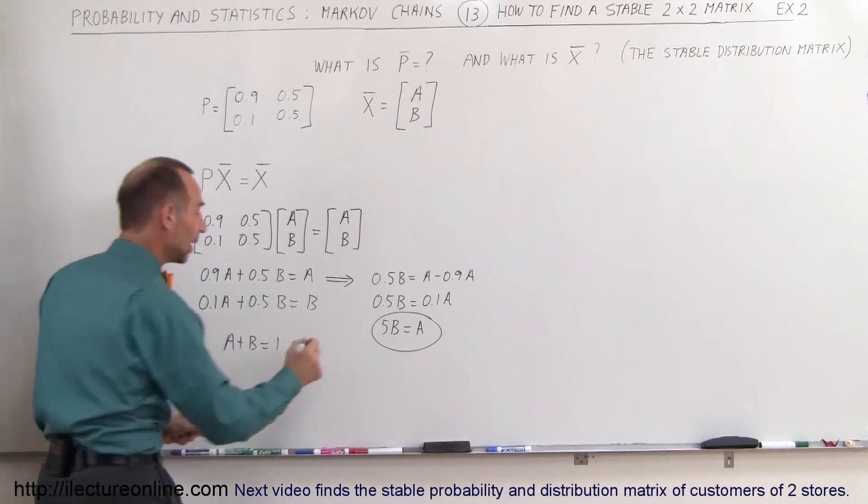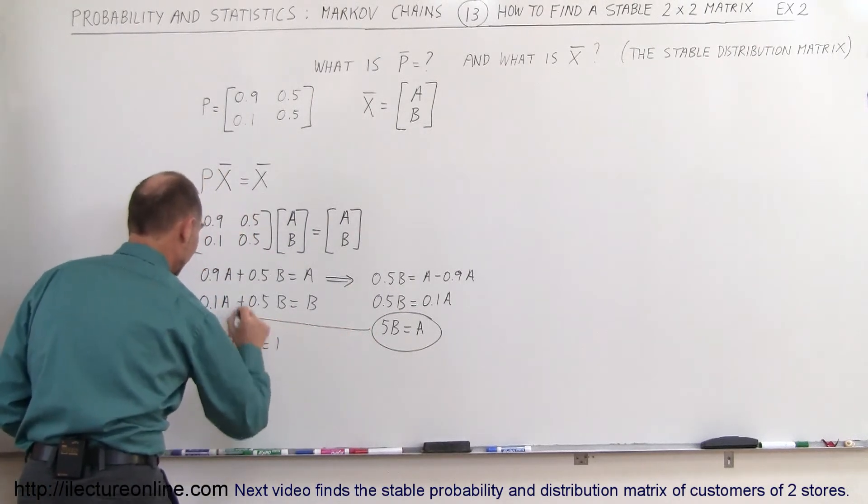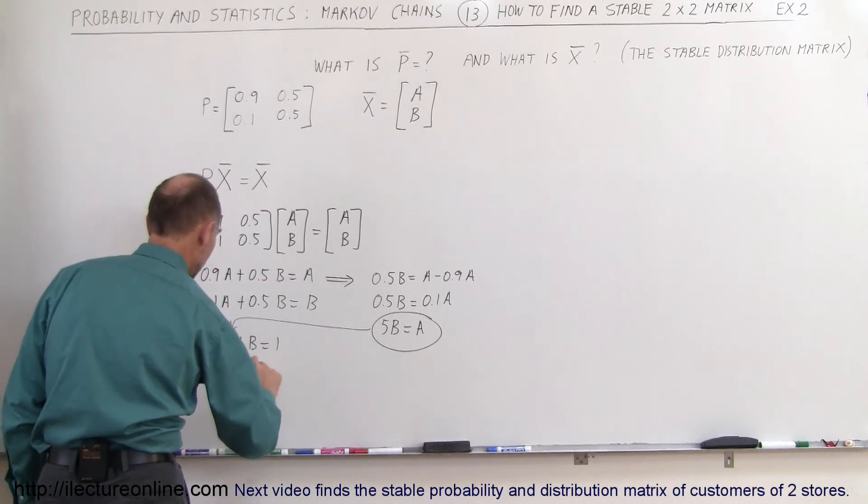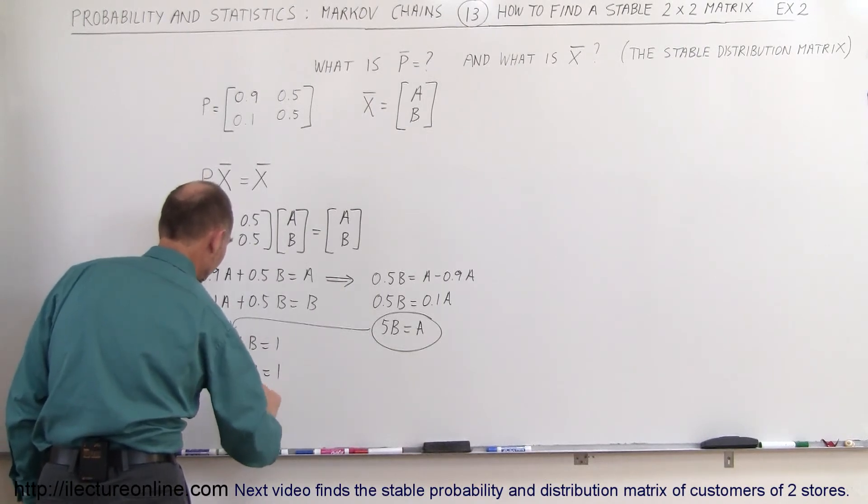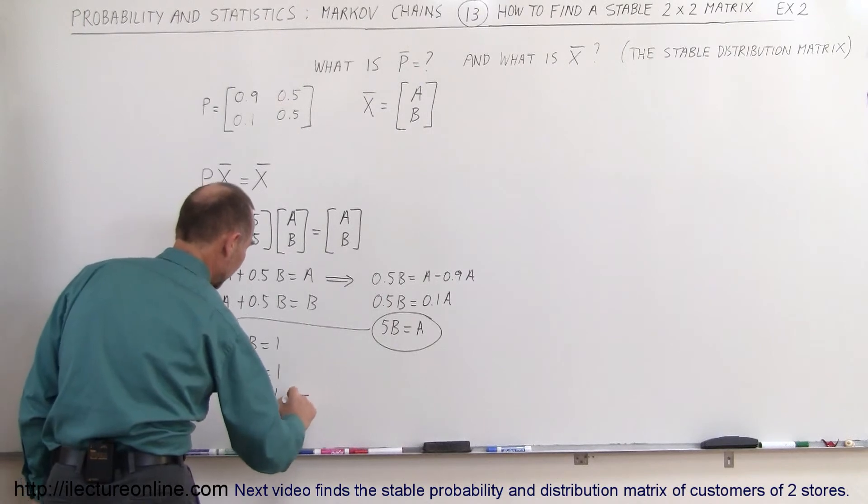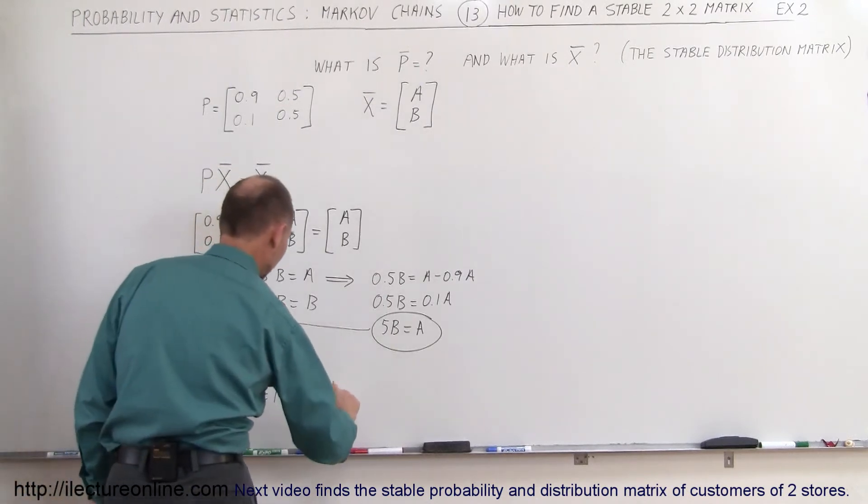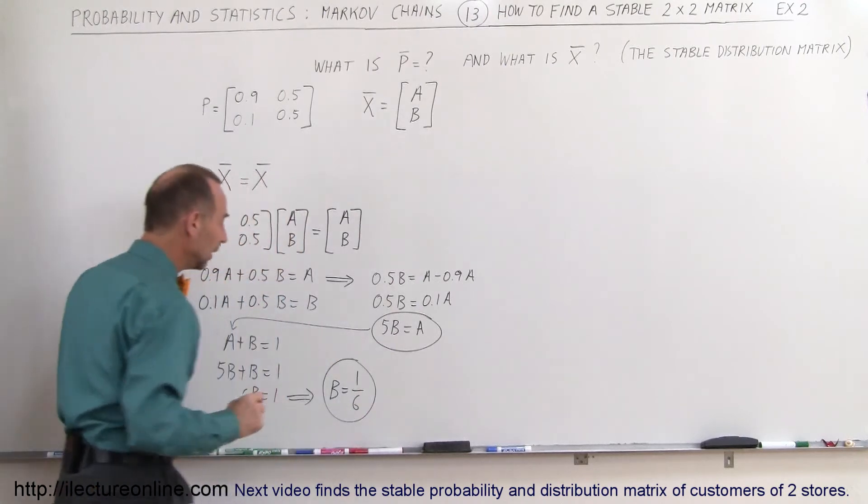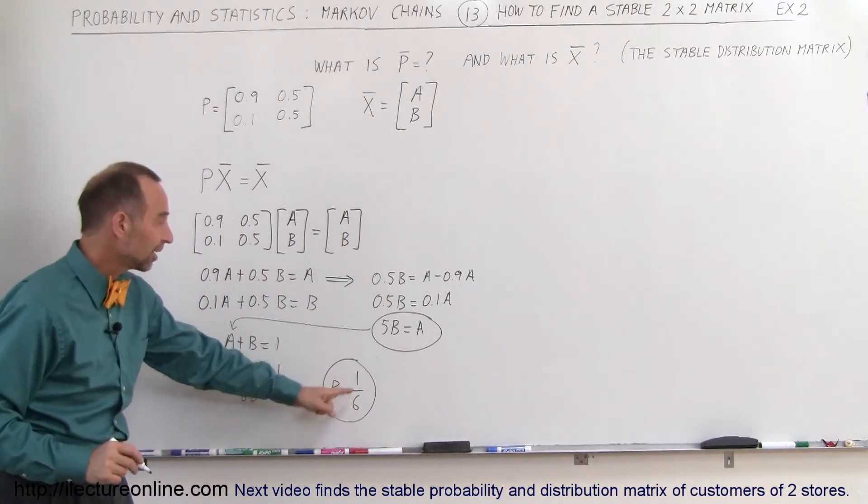We then use that right here by plugging it in for A. So we get 5B plus B equals 1, or 6B equals 1. So we can say that B equals 1 divided by 6.